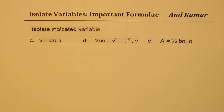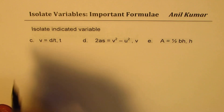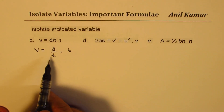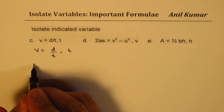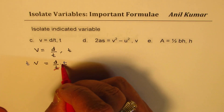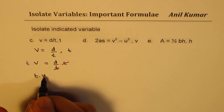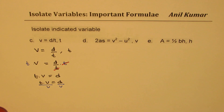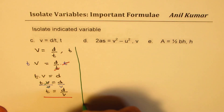Next example: velocity is displacement over time, v equals to d over t, and we need to isolate time. We multiply both sides by t — from the right side, time gets cancelled — so we get t times v equals to d. Now we divide both sides by velocity v, and we isolate t as d over v.